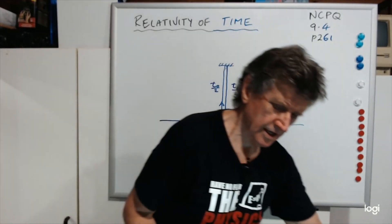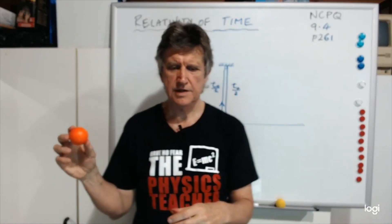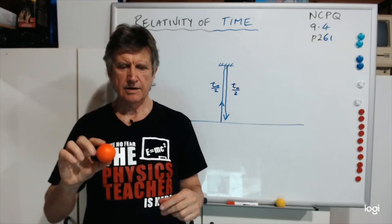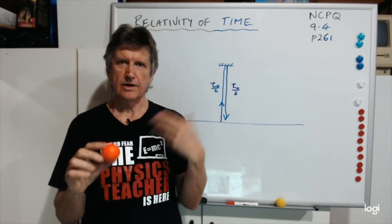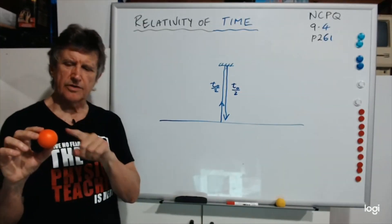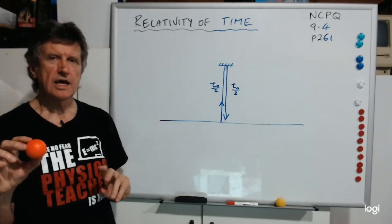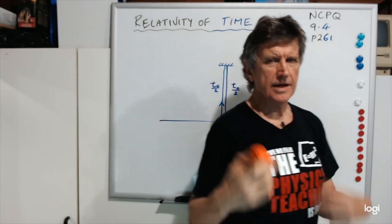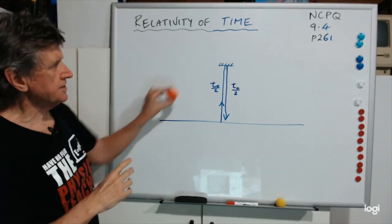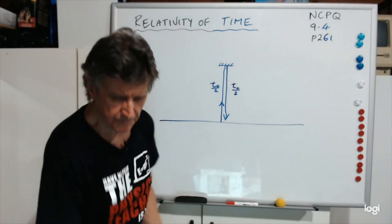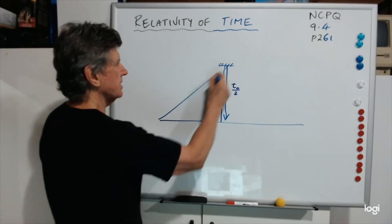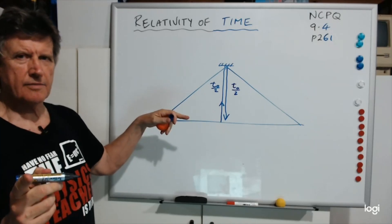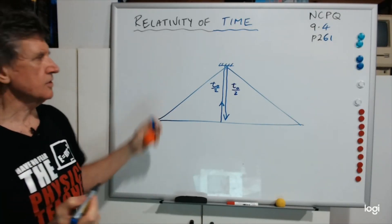Now I can demonstrate that — if I'm standing here and just go up and down, you see it go up and down, I see it go up and down. But watch what happens: keep an eye on the ball relative to the board when I go up and down but I'm walking at the same time. To me it just went up and down in front of my face, but you would have seen it go like that — that would have been the path the photon took in your frame of reference.